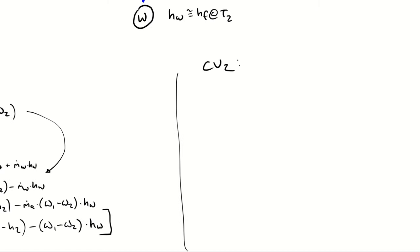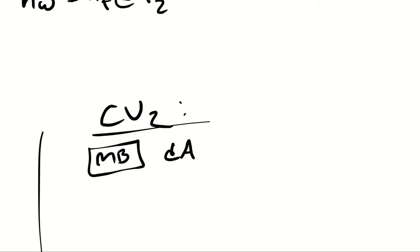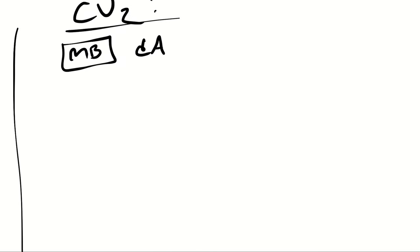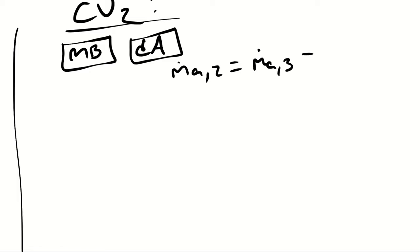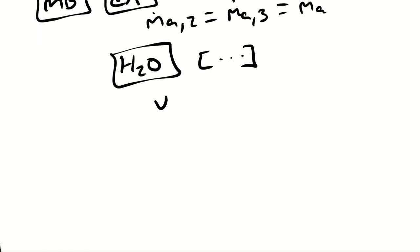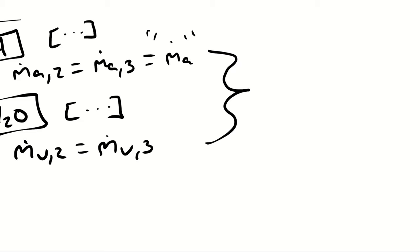For control volume 2, I have a simple mass balance. There's no opportunity for dry air to enter or exit except at states 2 and 3, and similarly for water vapor. Therefore ṁ_a2 equals ṁ_a3, which is the same ṁ_a quantity from earlier. On the water balance, ṁ_v2 equals ṁ_v3, which is what allows me to write ω₂ equals ω₃.